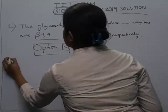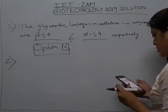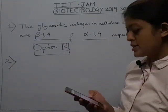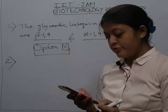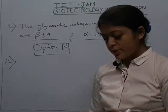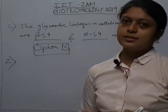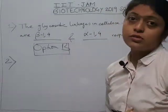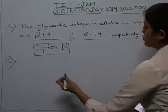The next question is: a mutation in the operator locus of the lac operon that confers constitutive expression of beta-galactosidase is — what? For this you need to know the structure of the lac operon, so let's draw it.